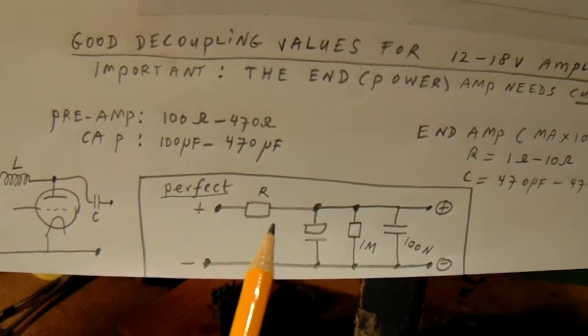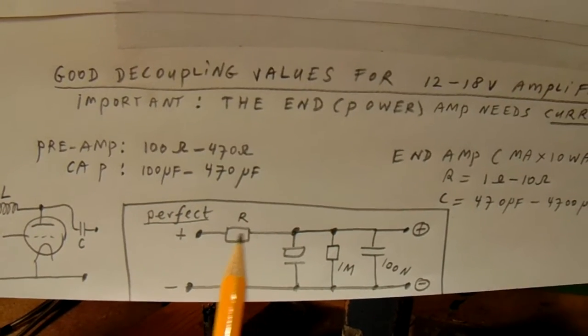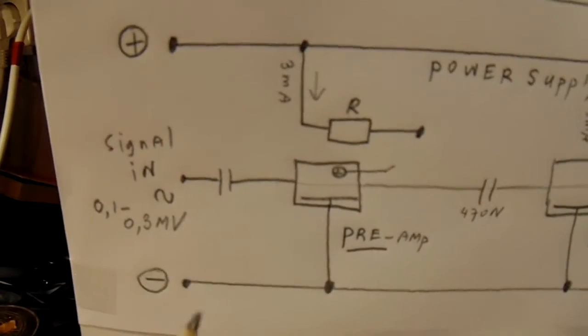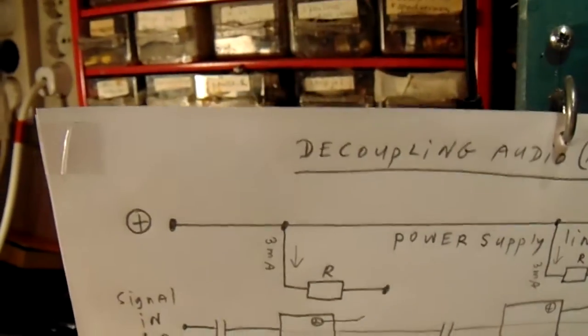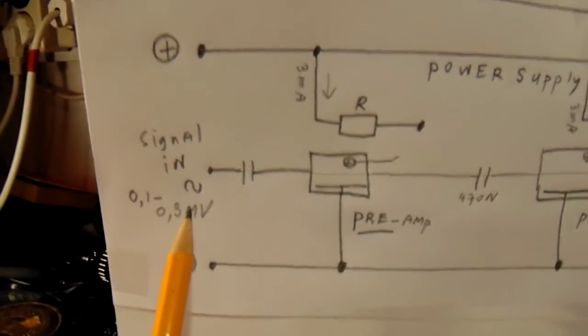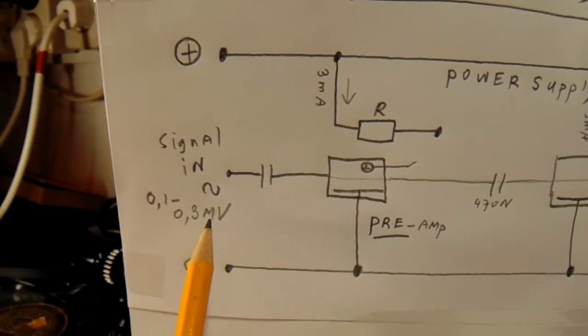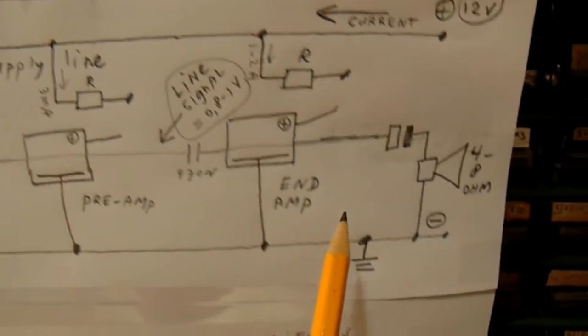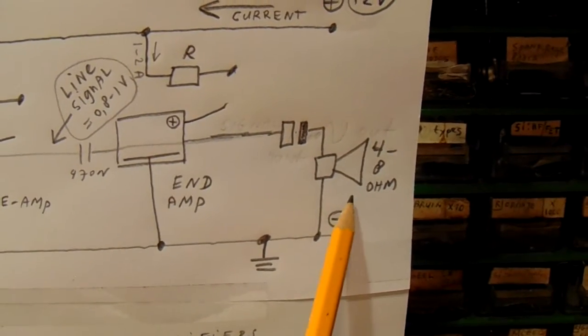A resistor, a capacitor, and then we send the current to the pre-amp or the end amplifier. So here we have the signal line. Here we send in, for instance, an audio signal between zero hertz and say 18 kilohertz. It's amplified here and here and here, and finally we hear the sound out of the loudspeaker box.